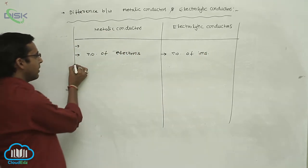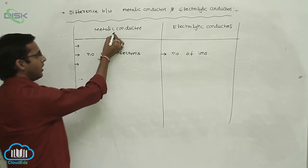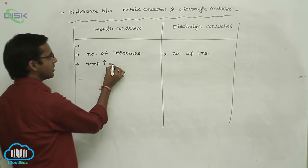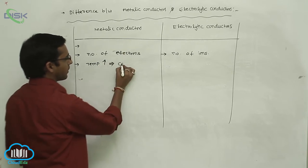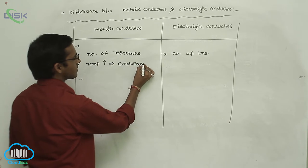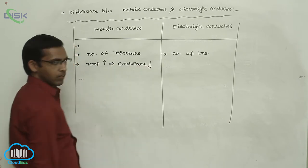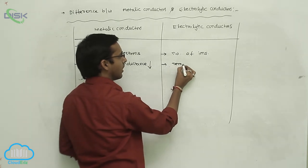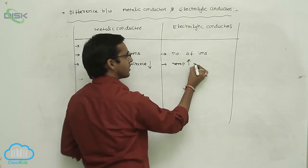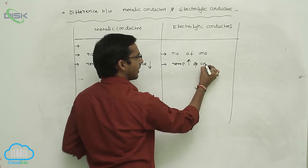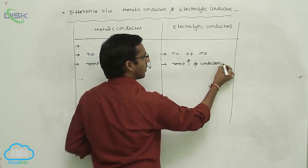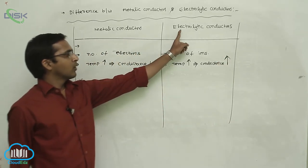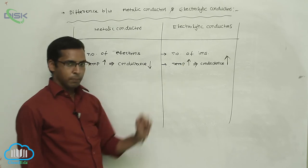In metallic conductors, whenever the temperature increases, the conductance property decreases. In electrolytic conductors, by rising of temperature, the conductance property completely increases. So electrolytic conductors are directly proportional to temperature.